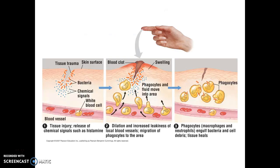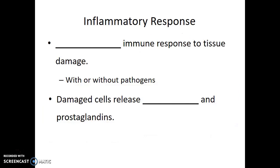The final aspect of the innate immune system is inflammation. Inflammation, like these other immune responses, is triggered regardless of which signature molecules are present on the invading cells. It really just takes tissue damage to initially release the molecules that trigger inflammation. Inflammation is a nonspecific immune response to tissue damage and will be triggered whether pathogens have been introduced or not. The cells release communication molecules — histamines and prostaglandins — which trigger inflammation.